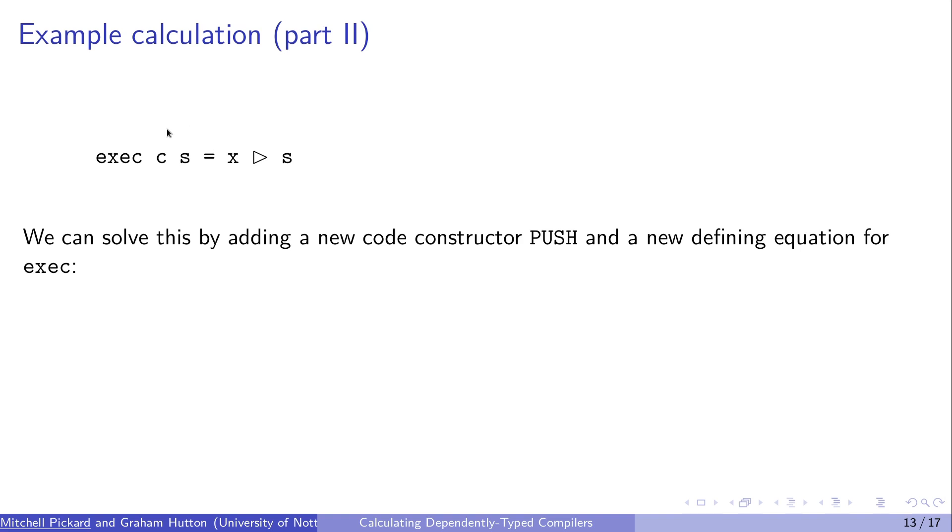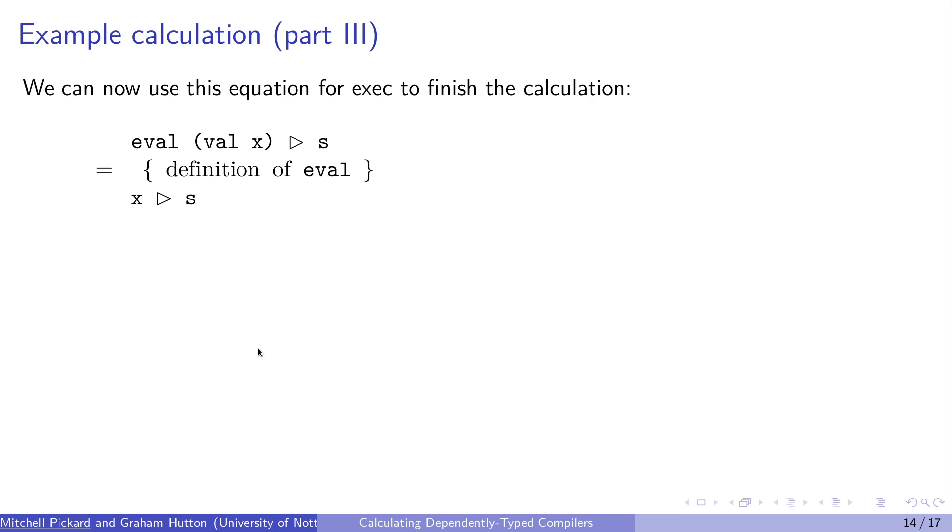And we can solve this. Because this C is existentially quantified, we can create a new code constructor here. So we're going to call it push, because as you'll see it simply pushes a value onto the stack. But the important part here is that this constructor captures all of the free variables on the right hand side. That means that this equation can then be used as a defining equation for exec. In this case, the push constructor simply pushes this value onto the stack.